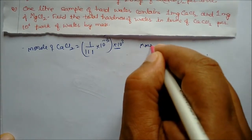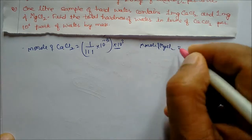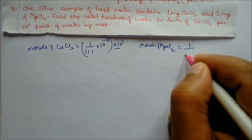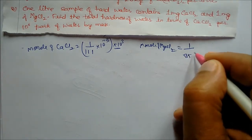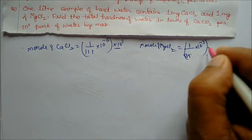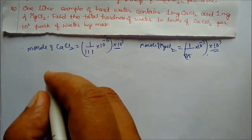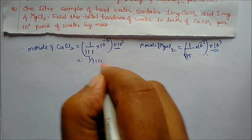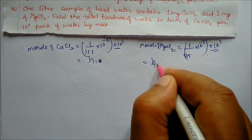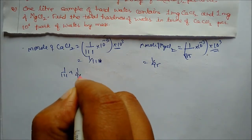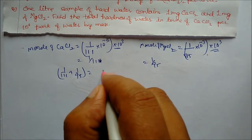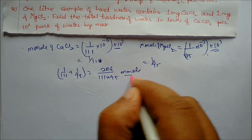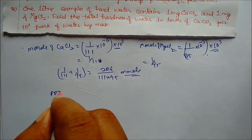Millimoles of magnesium chloride: weight is 1 milligram divided by molar mass 95, multiplied by 1000, giving millimoles. Adding the two contributions: total millimoles = 1/111 + 1/95, which equals (111 + 95)/(111 × 95) = 265/(111 × 95) total millimoles.